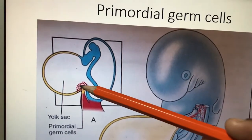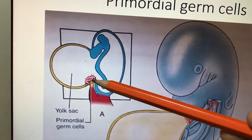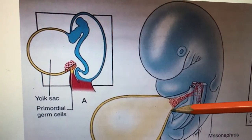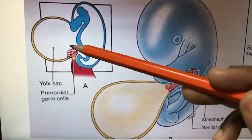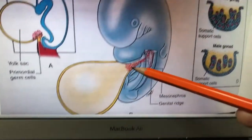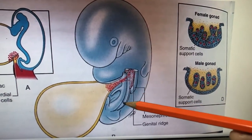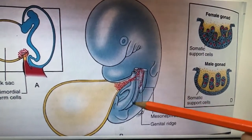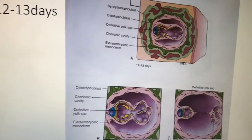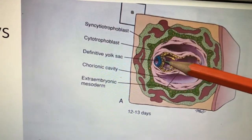The primitive yolk sac: in the wall of the yolk sac cavity you will find the primordial germ cells. These germ cells are very important for the urogenital system. From here, the germ cells migrate — this is an MCQ point. Primordial germ cells are present in the wall of the yolk sac, and from here they migrate and will be transformed into male and female gonads in the genital ridge.